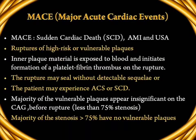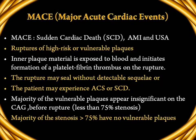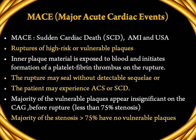Major acute coronary events (MACE) include sudden cardiac death, acute myocardial infarction, and unstable angina. Rupture of high-risk or vulnerable plaques is the cause. The inner plaque material is exposed to the blood in the coronaries, initiating the formation of platelet fibrin-rich thrombus on the ruptured site. The rupture may seal without detectable sequelae, or it may invite thrombus formation with total occlusion of the coronaries, leading to acute coronary syndrome or sudden cardiac death. Majority of vulnerable plaques appear insignificant on coronary angiogram before rupture — they do not show significant stenosis; the stenosis is always less than 75%. Majority of stenosis of more than 75% have no vulnerable plaques.